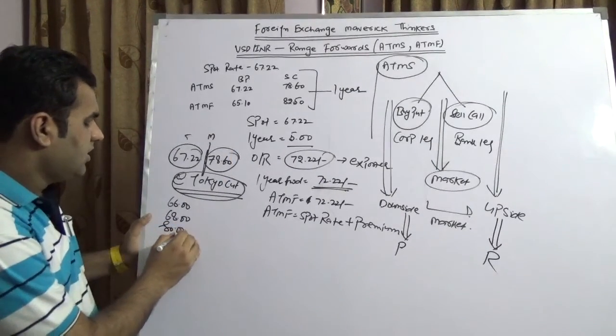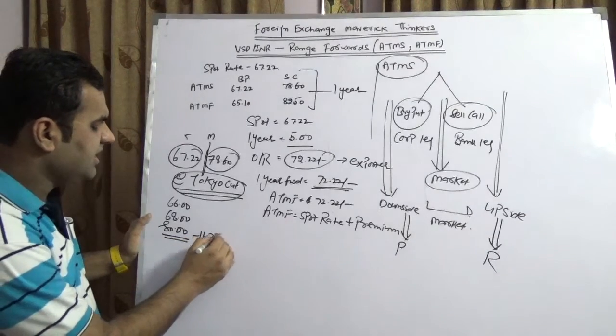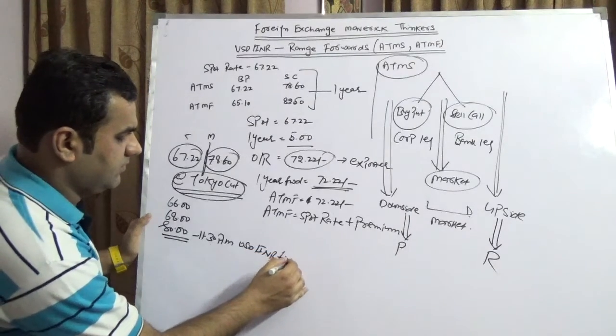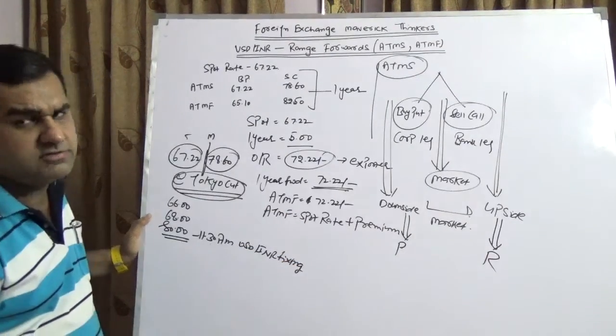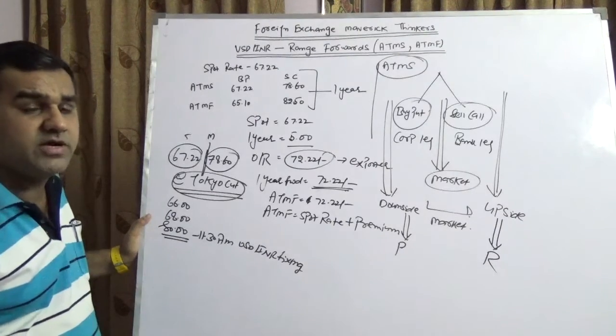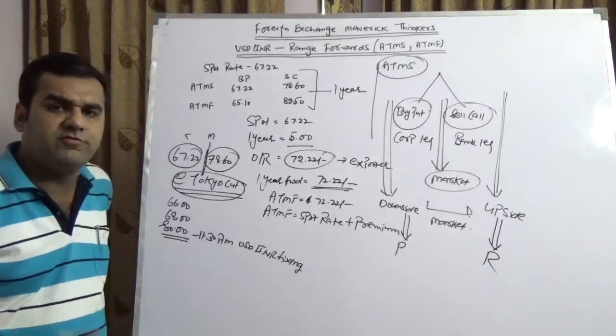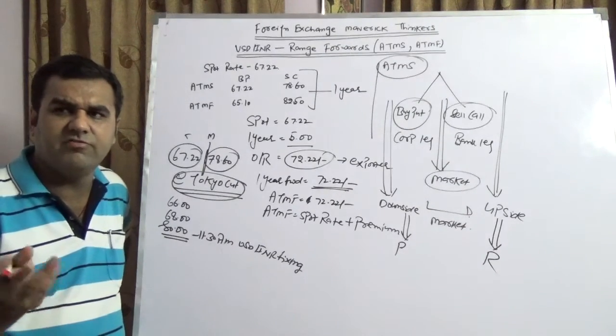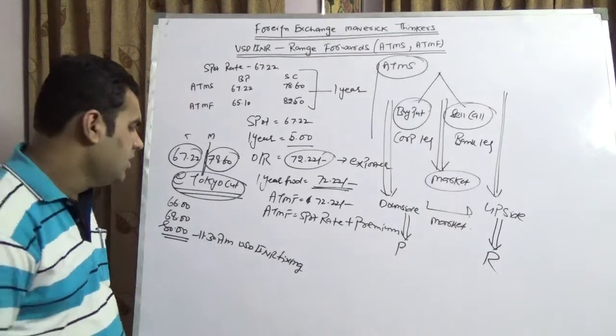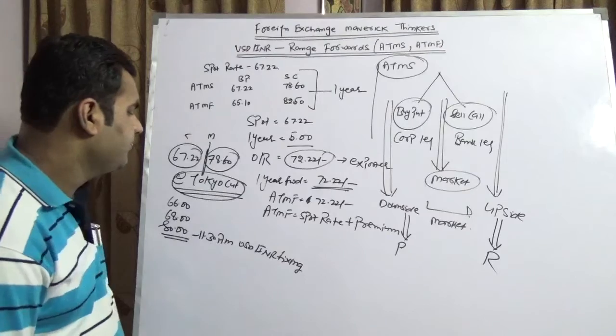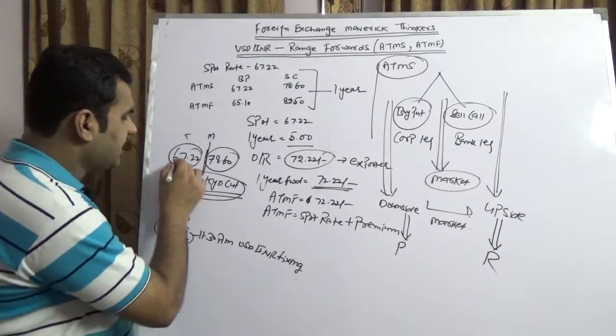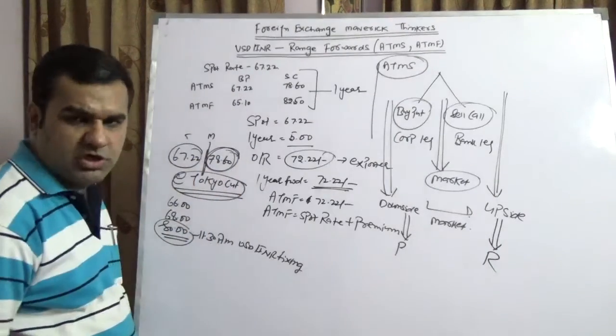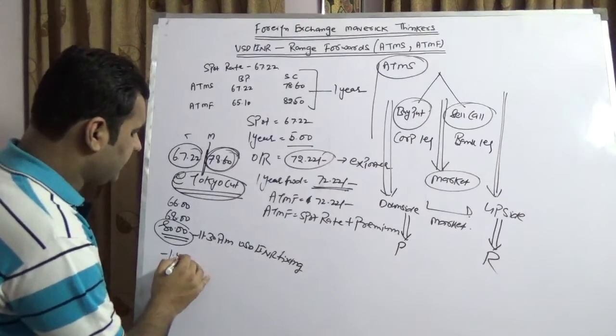Suppose the Tokyo cut published 80. Now this Tokyo cut is nothing but 11:30 AM USD-INR fixing which may be near to spot or might not be near to spot. Please note that Tokyo cut varies from bank to bank. Now suppose it is published 80, would you sell at 67.22? No. Would a bank buy? Surely. Now you would have a loss of approximately 1 rupee 40. This is at-the-money spot.